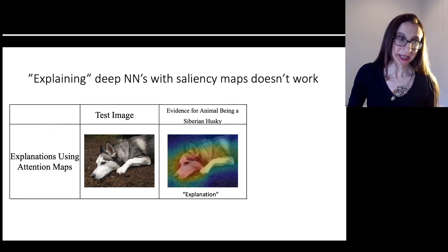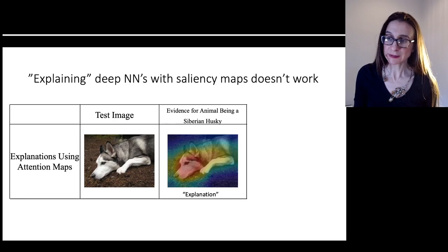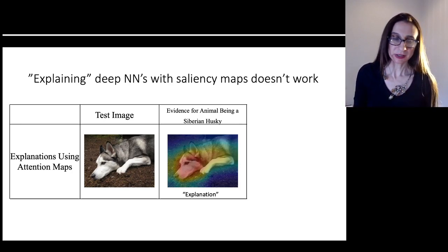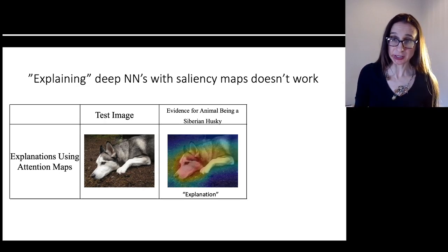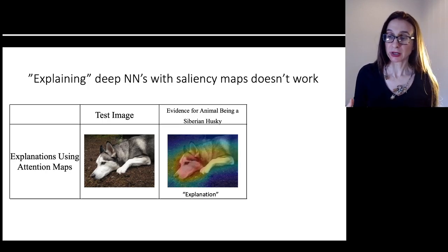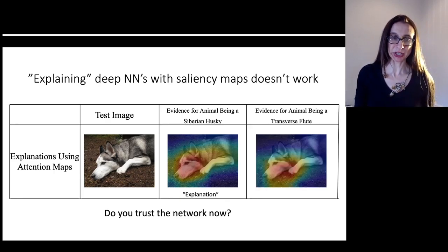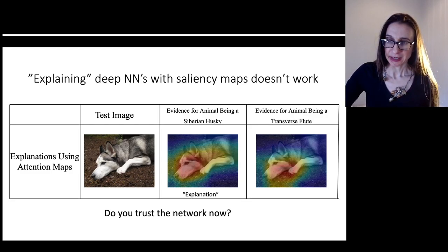A lot of people try to explain neural networks, but it doesn't work very well, because standard neural networks are not designed to be interpretable. Many people particularly like saliency maps or attention maps, which are supposed to give you an explanation for why an image is classified a certain way — for example, why an image is classified as a Siberian husky. The network highlights the part you'd expect, so you might trust it. But then you find it gives you almost exactly the same explanation for why an image contains a musical instrument like a transverse flute.